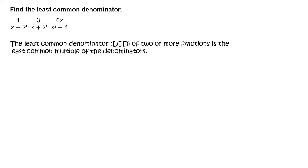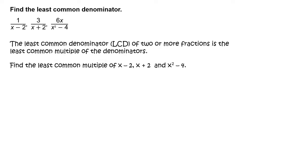The least common denominator (LCD) of two or more fractions is the least common multiple of the denominators. So, find the least common multiple of x minus 2, x plus 2, and x squared minus 4.